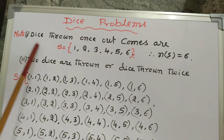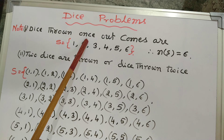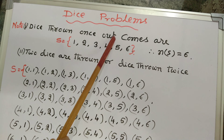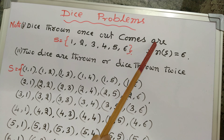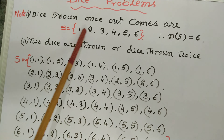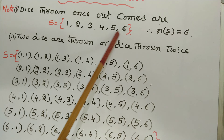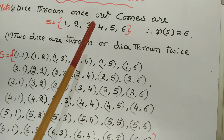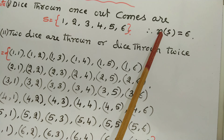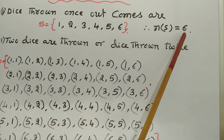Note: one dice thrown once. Outcomes are represented as 1, 2, 3, 4, 5, 6. All the faces are numbered, so there are six numbers. Therefore, n of S, the total number of outcomes, is equal to 6.